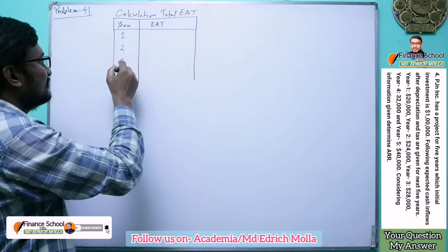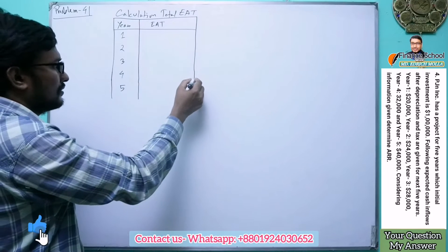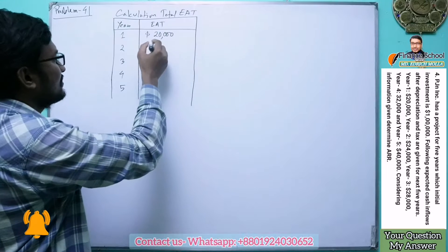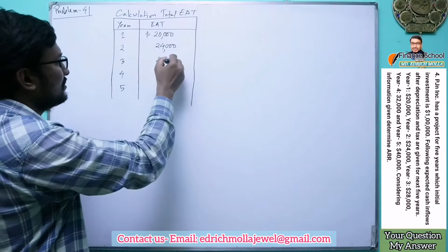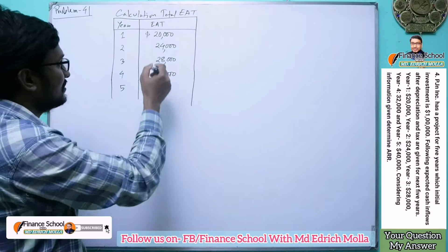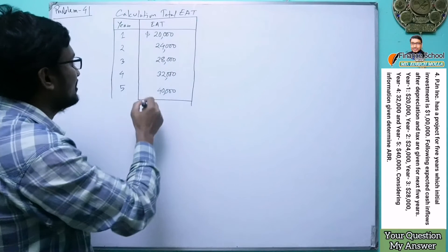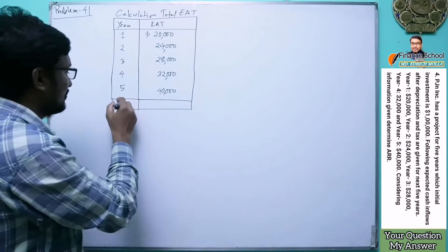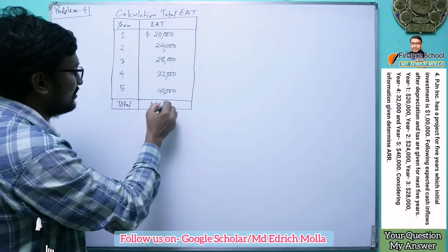We are given five years of cash flows after depreciation and tax. Year one: $20,000; year two: $24,000; year three: $28,000; year four: $32,000; and year five: $40,000. Summing these, the total EAT comes to $1,44,000.